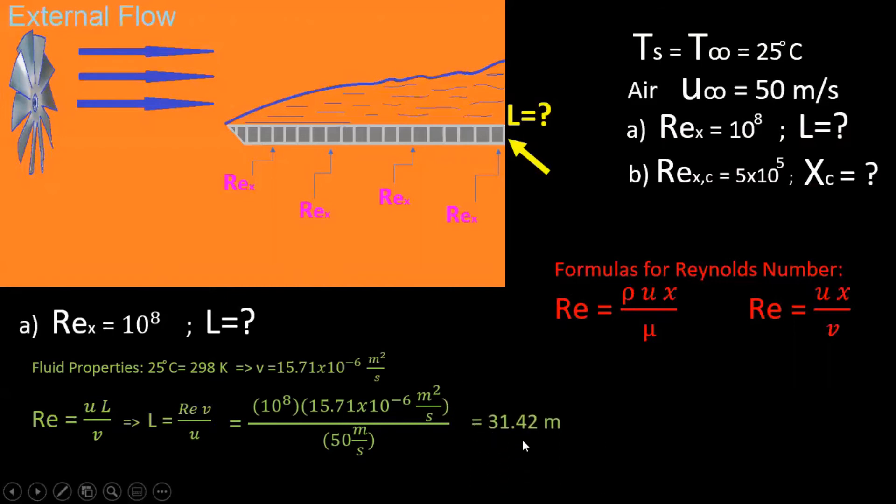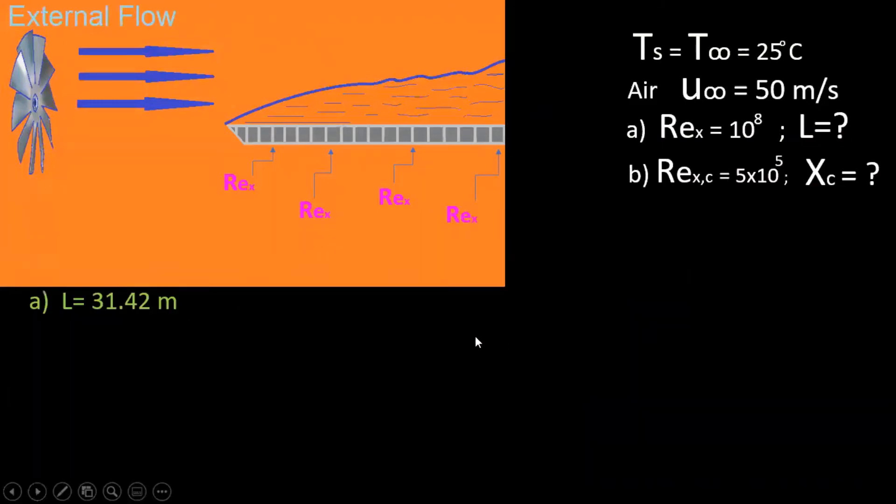We know them, calculated, and we can find a 31.42 meter length for this plate in order to reach this kind of Reynolds number.